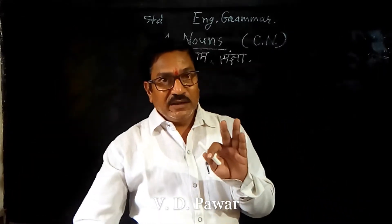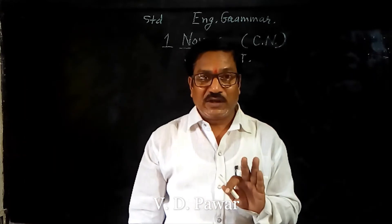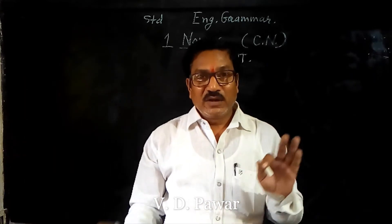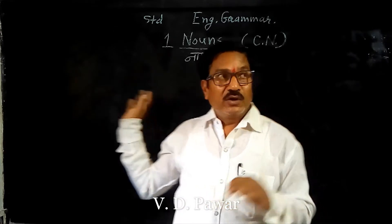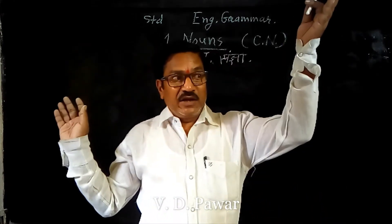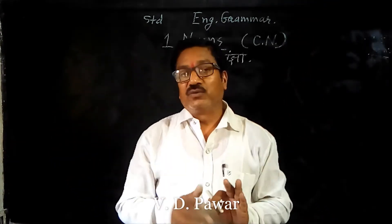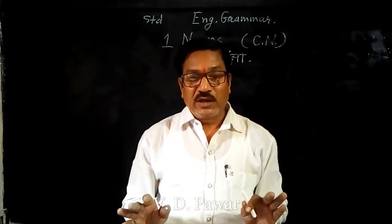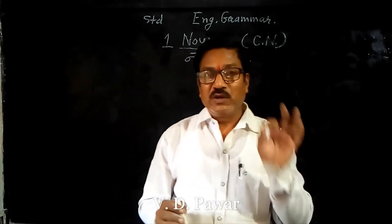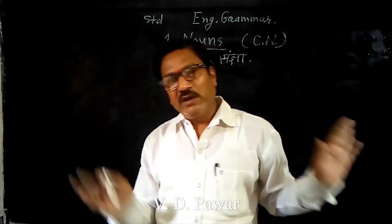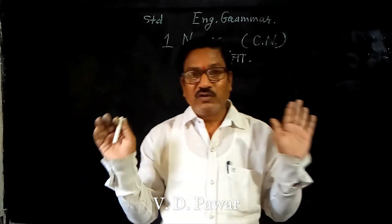अमरावती क्या है अपना? शहर, तो city। गाँव। Blackboard. Light. Door. यह है वस्तुओं के, जगहों के, किसी भी चीज़ के नाम। The names given to each and everything — they are nouns.